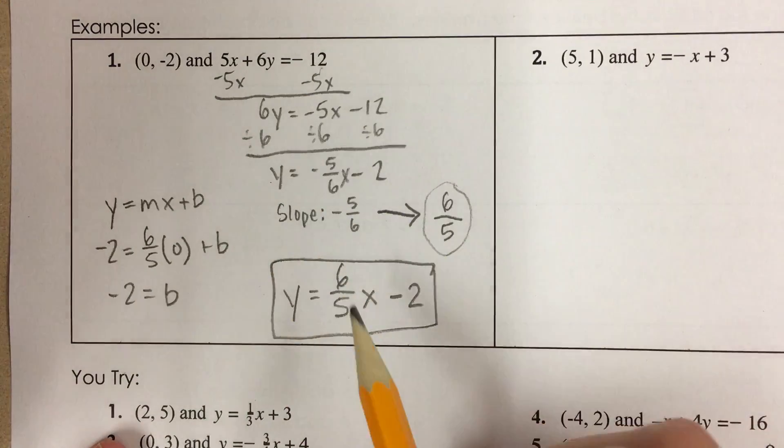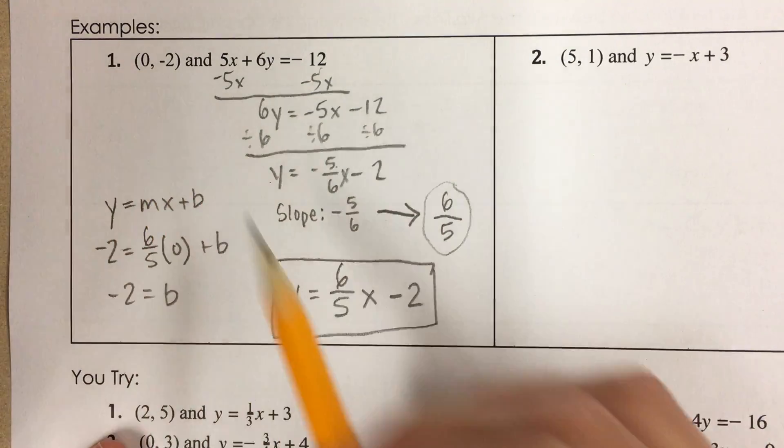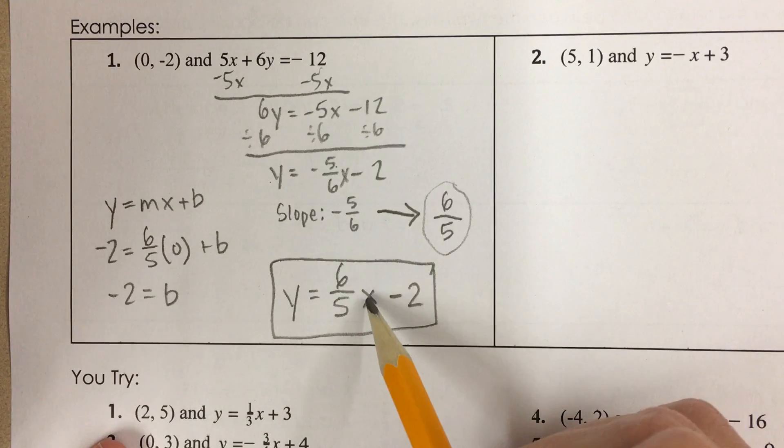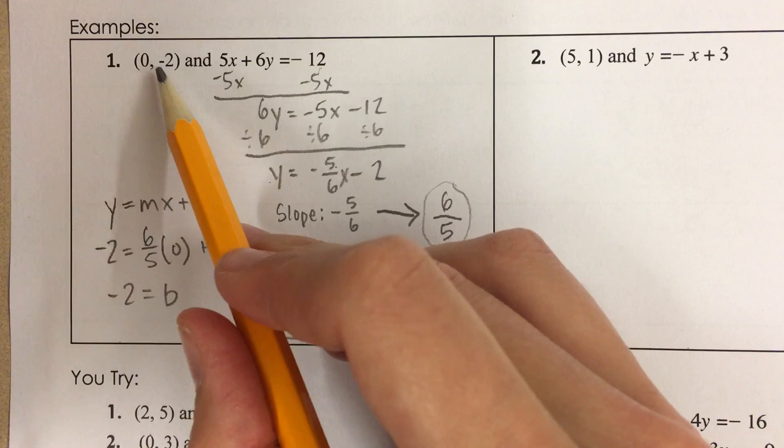Okay, and notice, this is perpendicular to that line. It has a slope that's opposite or reciprocal. And if I plug in this point, it'll work. This is 6 fifths times 0 is 0, minus 2 is negative 2. Okay, so it's perpendicular to that line and it goes through this point.